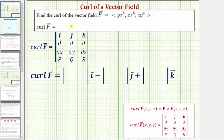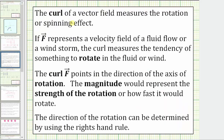We want to find the curl of the given vector field. Before we do this, let's talk about what the curl of a vector field represents. The curl of a vector field measures the rotation or spinning effect. If the vector field f represents a velocity field of a fluid flow or windstorm, the curl measures a tendency of something to rotate in the fluid or wind.